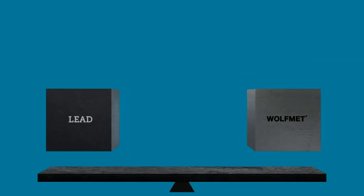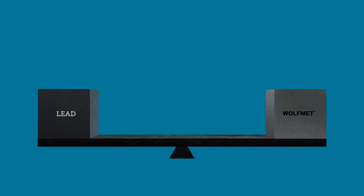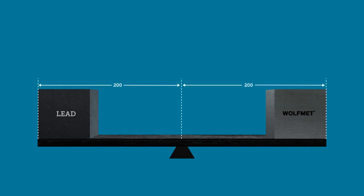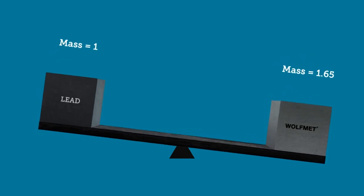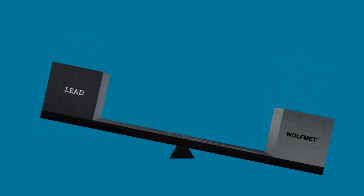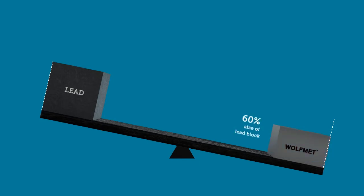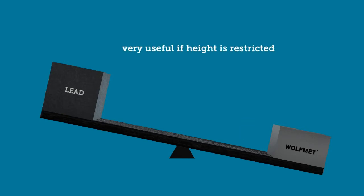Take a simple balance that has two blocks of equal size which are spaced the same distance from the fulcrum. As the WolfMet alloy is around 60% more dense than lead, it will have a higher mass and the balance will tip. The WolfMet block can now be reduced in size to balance with the lead. In fact, the WolfMet block can be 60% of the size of the lead block for the same mass, saving 40% of the space. This is very useful if height is restricted and components need to fit into a small area.